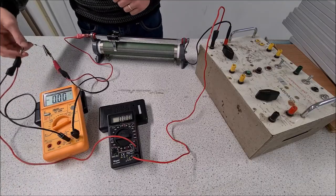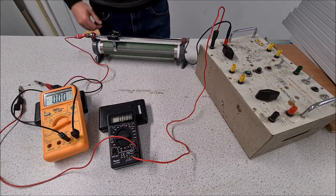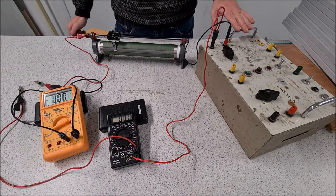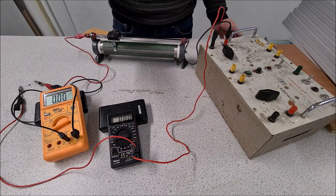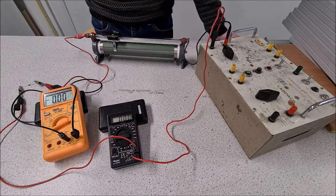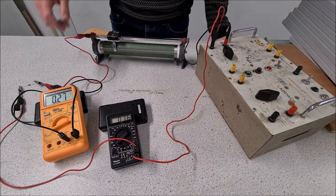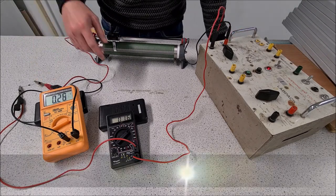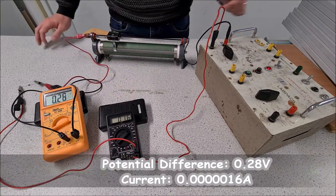In this one, we have the semiconductor diode, and I've had to change up the power supply to this one, which gives much lower voltages. And then I'm using the digital multimeters for both the current and the potential difference. So our first reading is 0.28 volts, and the current is 1.6 microamps.